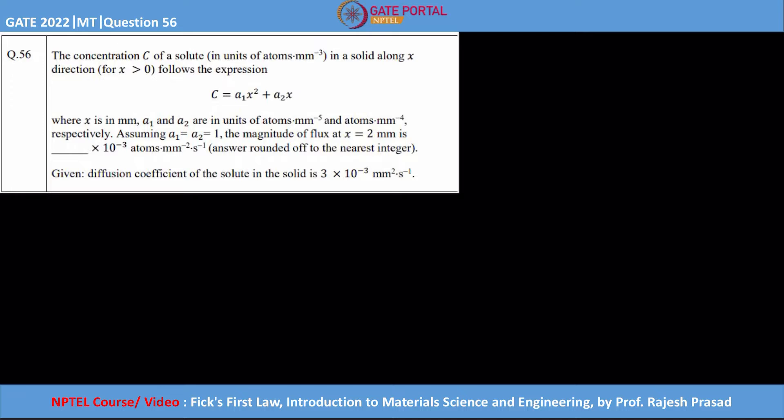How to go about this question? What all we have: we have the concentration profile given to us - concentration versus distance. x is a distance, C is a concentration. So we have got a concentration profile and we have got the diffusion constant, and they are asking at a particular distance what is the magnitude of flux.